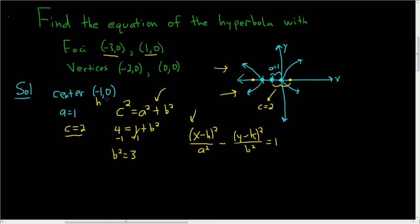So we get x minus negative 1, so x plus 1. And a was 1, so a squared is 1. Minus and then (y - 0)² squared, because k is 0, and b squared was 3, and this is equal to 1.